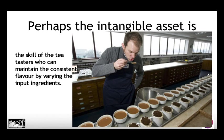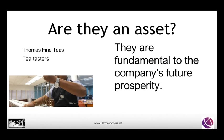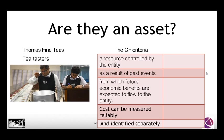Instead, we might think of the tea taster as the key to consistent flavour. Is the tea taster the intangible asset? There is an awful lot of skill in what tea tasters do, and they are fundamental to the company's future prosperity. However, the accounting standards insist that for an asset to be classified as such, there must be control by the entity. Tea tasters are human beings — they are not compelled to remain — so we cannot classify them as an asset.